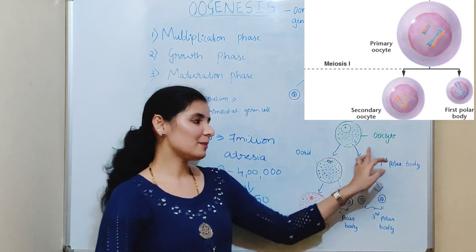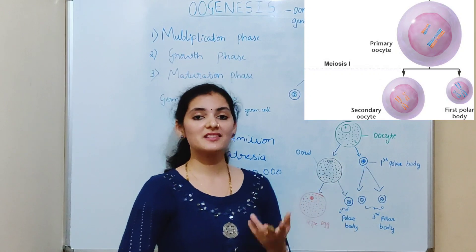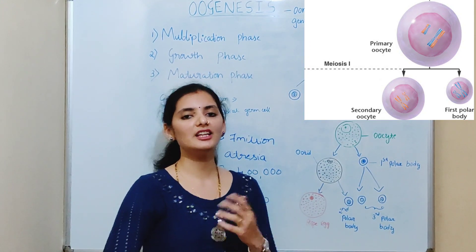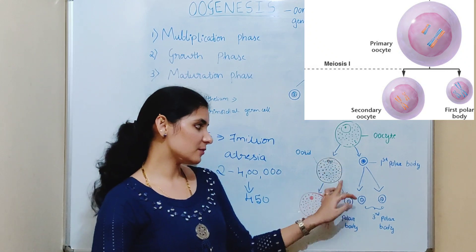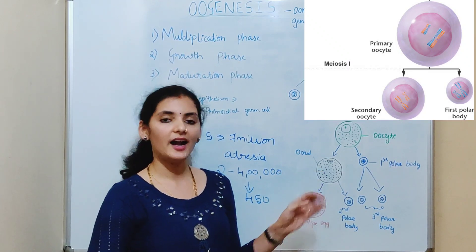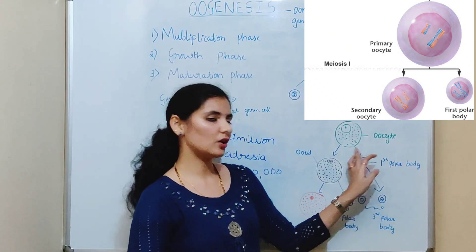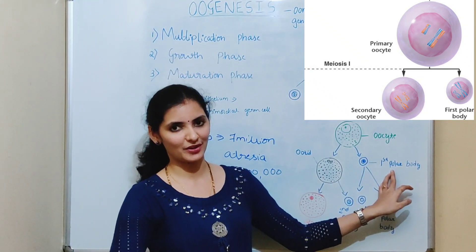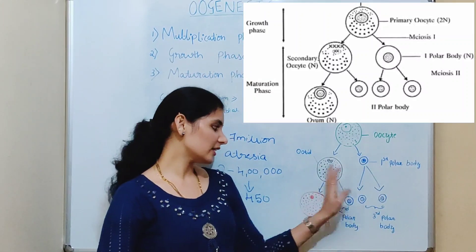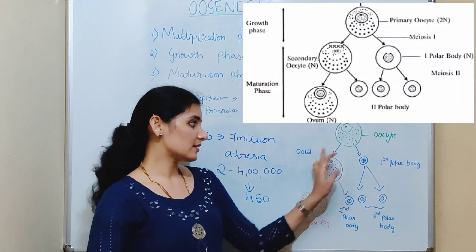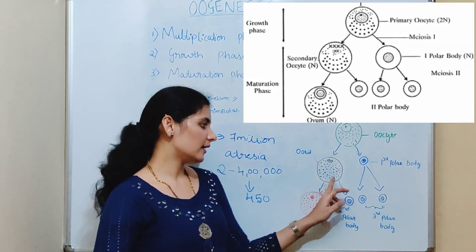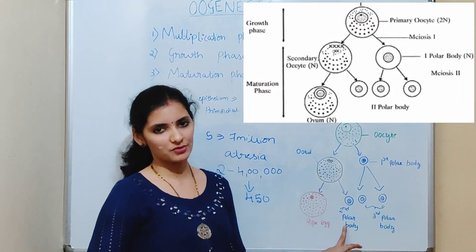During the maturation phase, the primary oocyte completes meiosis one. Since meiosis one is a reductional division, n number of chromosomes will be received by each of the two daughter cells. After karyokinesis there is unequal cytokinesis — a large amount of cytoplasm is received by one daughter cell, known as the ootid or secondary oocyte, and very little cytoplasm is received by the other daughter cell, known as the first polar body. The secondary oocyte and first polar body then undergo the second meiotic division, which also involves unequal cytokinesis. The secondary oocyte gives rise to one large ripe egg receiving a large amount of cytoplasm, and a second polar body receiving very little cytoplasm.